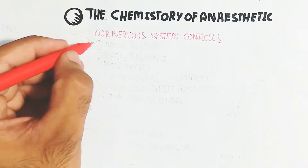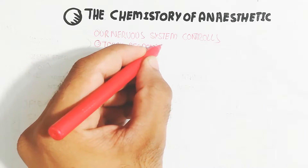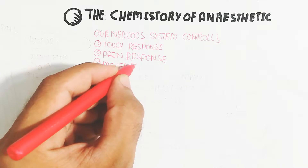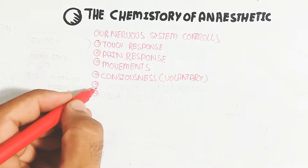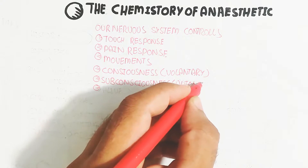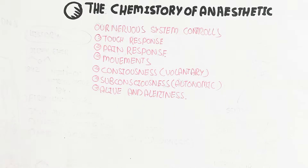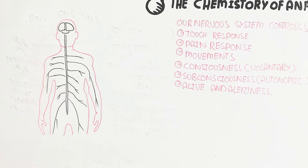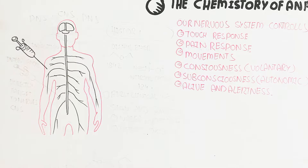Our nervous system controls touch response — when something is touched in our body we get a response — and pain response and movement due to the nervous system. This is basically voluntary: consciousness and voluntary actions. The subconsciousness is the autonomic nervous system, which controls heartbeat, the digestive system, alertness, and other things. The nervous system contains the brain and spinal cord as the central nervous system, while the peripheral region contains the peripheral nervous system.